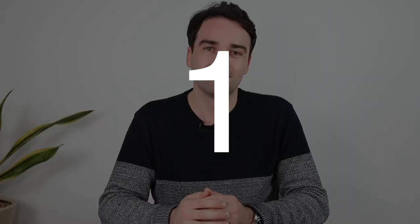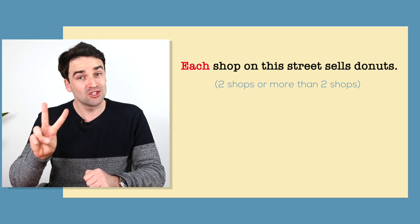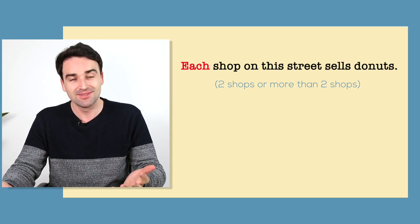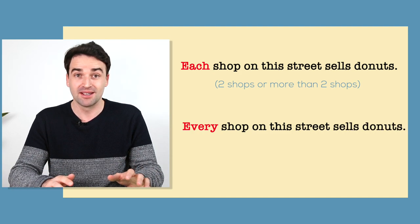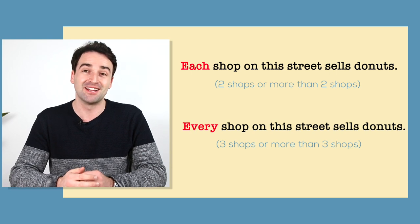But there are some more differences — here are three more. First, when you're talking about two things, you have to use 'each.' But when you're talking about three things or more, you can use 'each' or 'every.' For example: 'Each shop on this street sells donuts' — there might be two shops or more. 'Every shop on this street sells donuts' — there are definitely three or more shops.